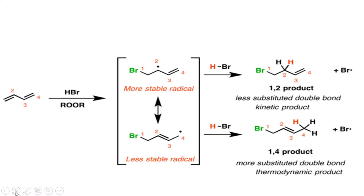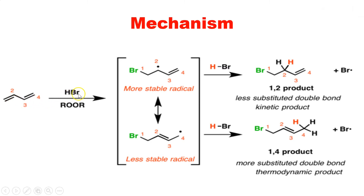Now let us see the mechanism. In the case of the mechanism, we have 1,3-butadiene, and it is reacting with HBr as well as a peroxide. This peroxide, as we have seen in the case of the anti-Markovnikov rule, will first form radicals.